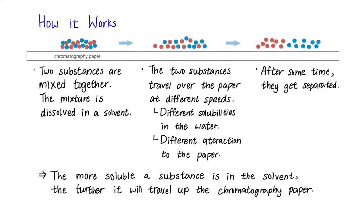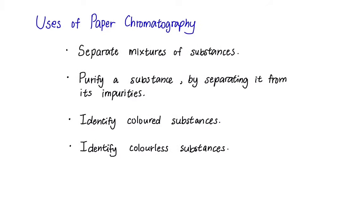So how does this chromatography work? Initially, two substances are mixed together and dissolved in a solvent. These two substances will then travel at different speeds according to their own solubilities in water and attraction to the paper. As a result, we will see them separated after a period of time. We can also find out that the more soluble a substance is in the solvent, the further it will travel across the chromatography paper. The uses of paper chromatography are various and are the following.